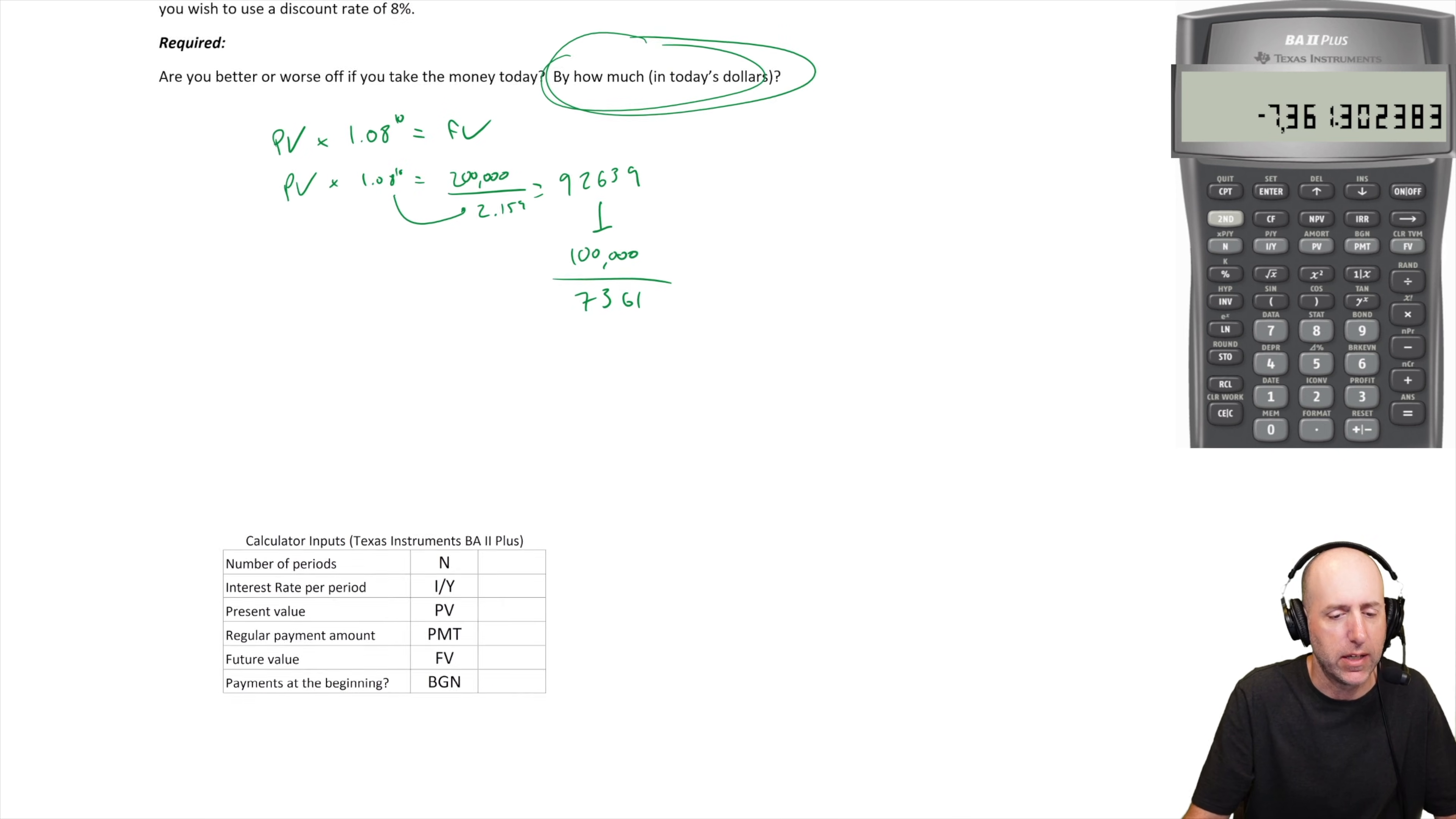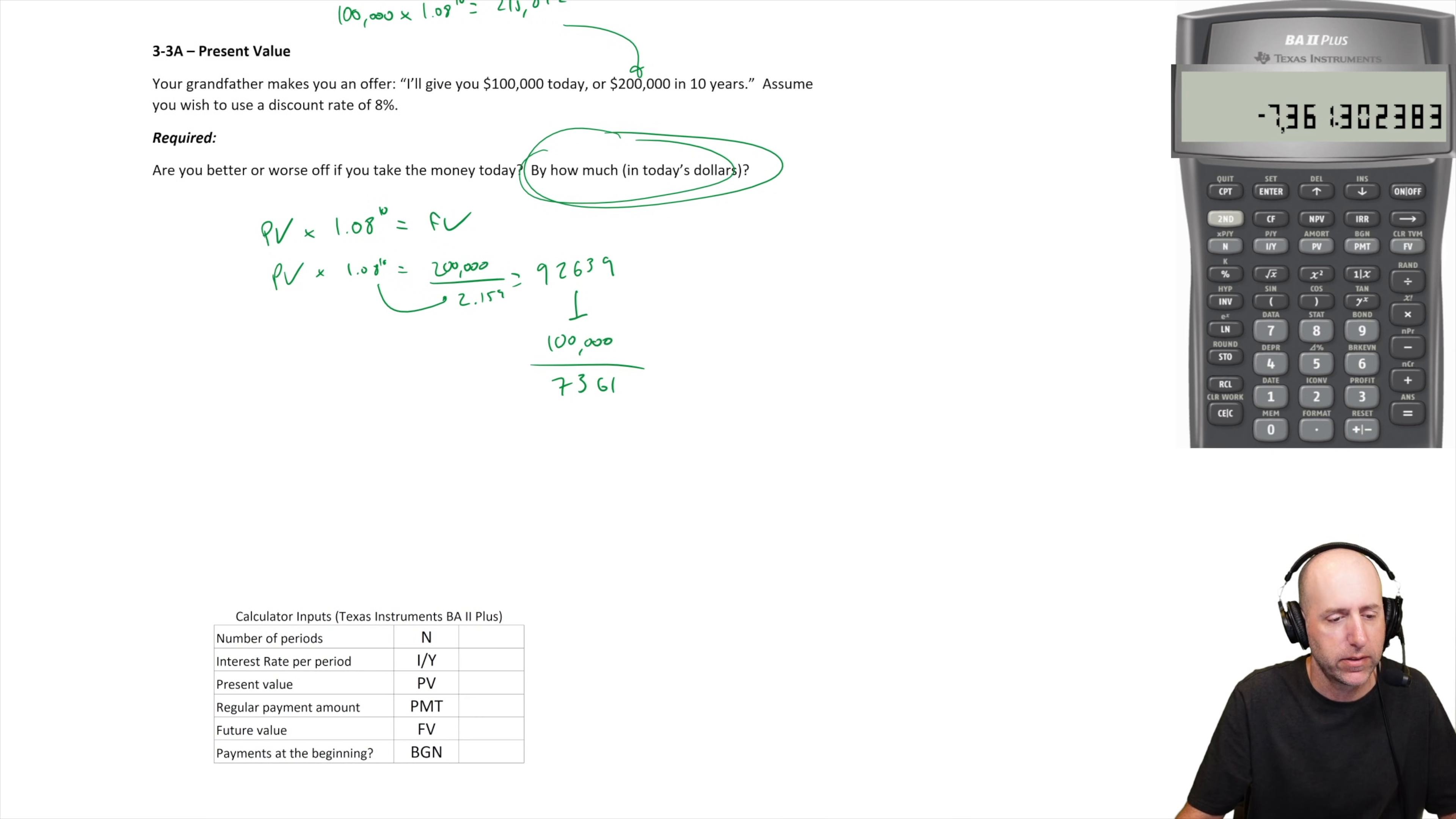Showing you how to do this in the financial calculator, let's think of our inputs here. The number of periods here is 10.